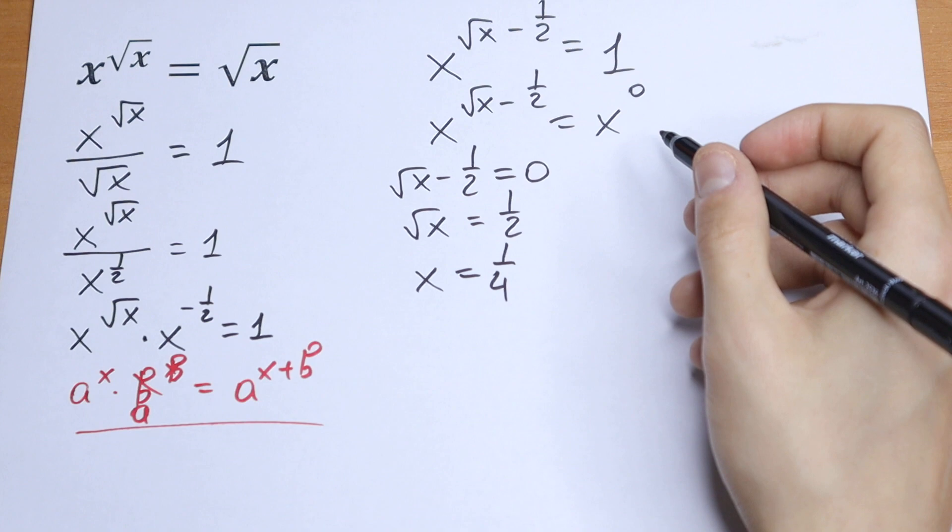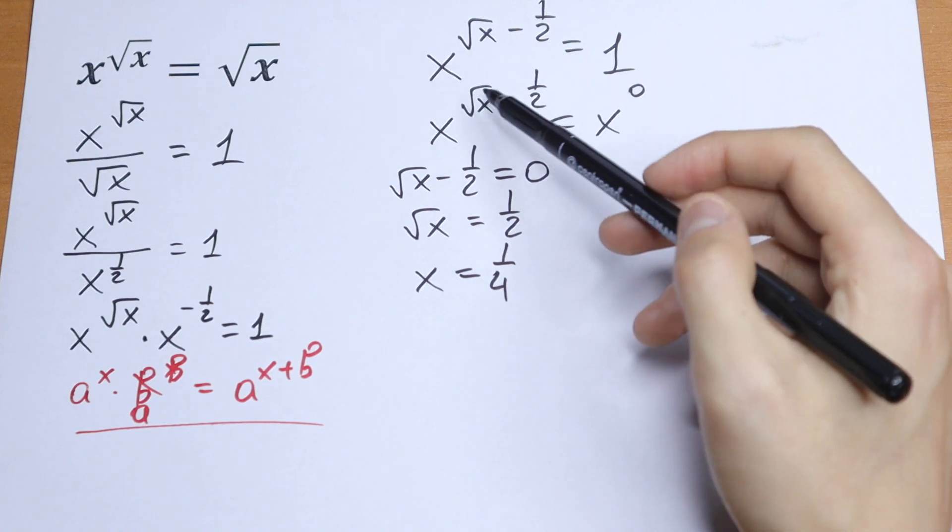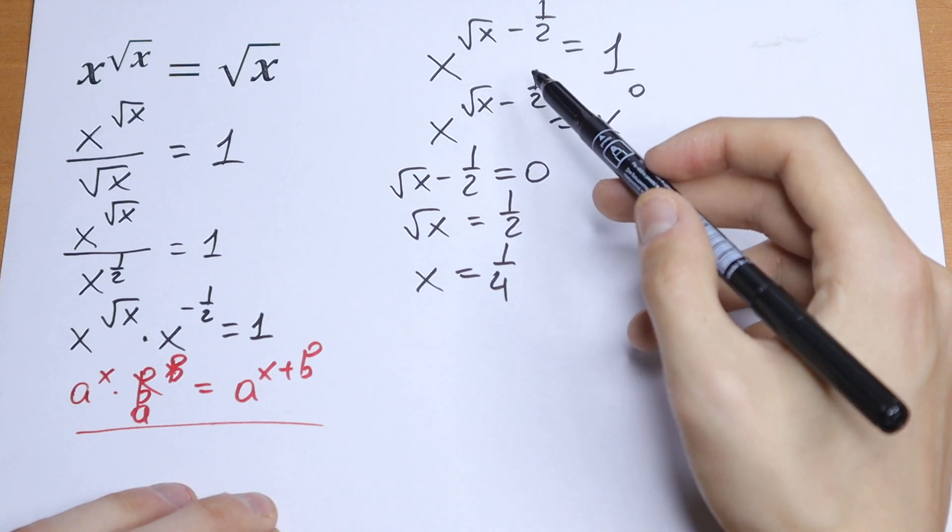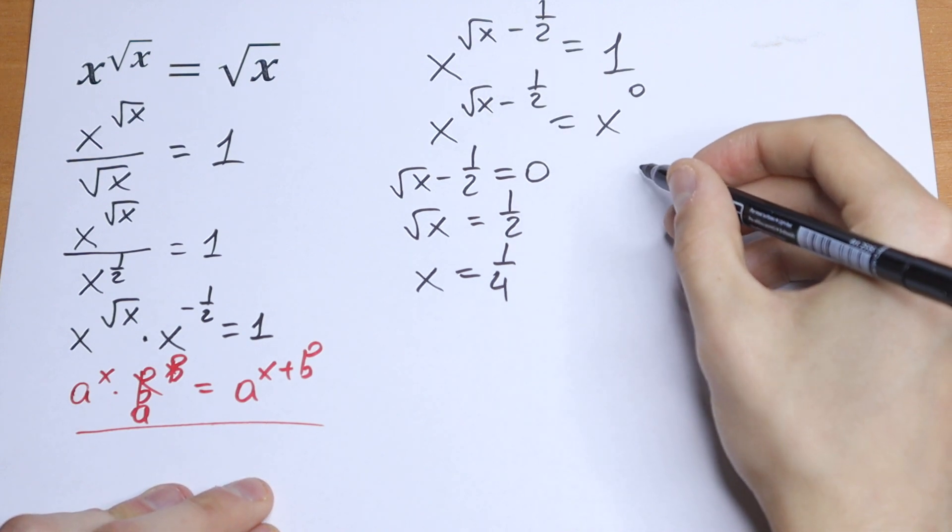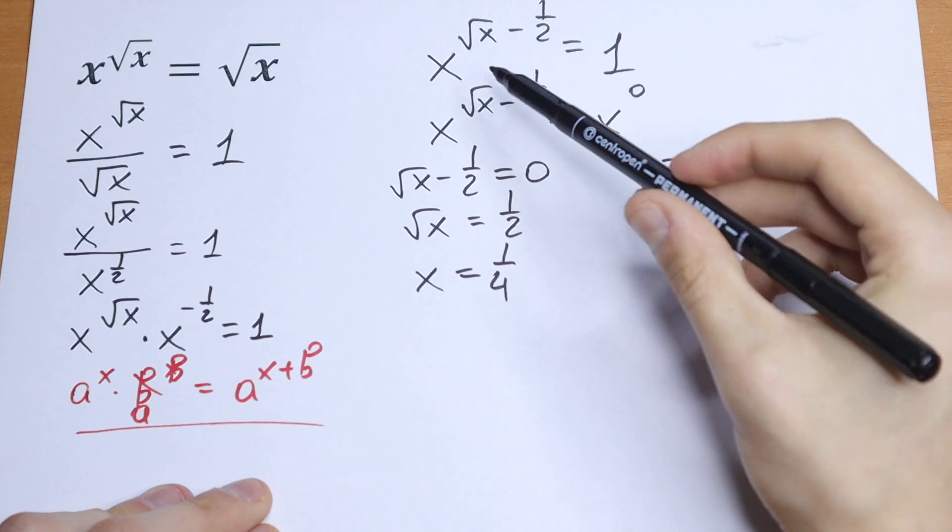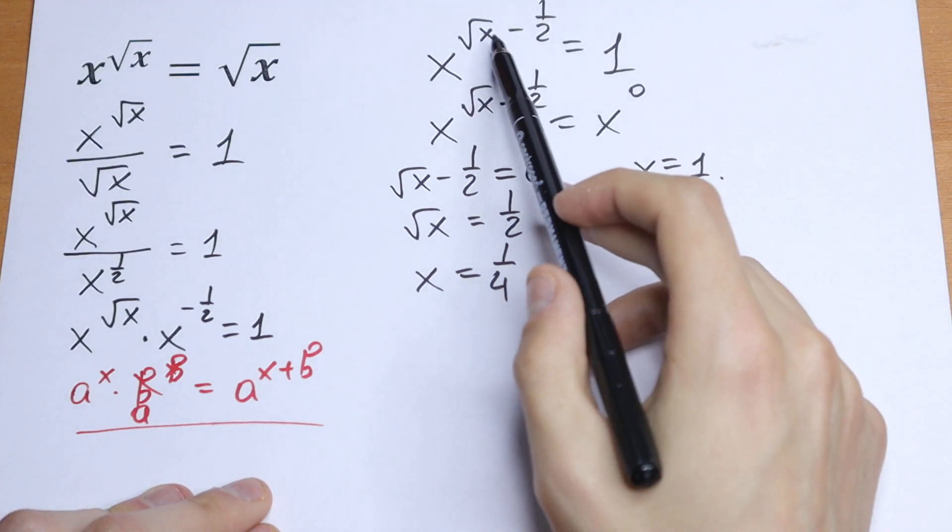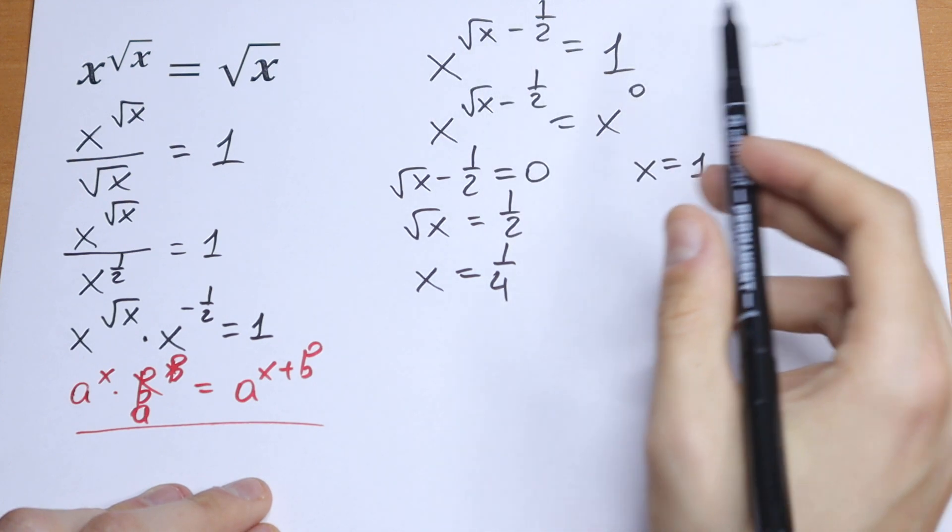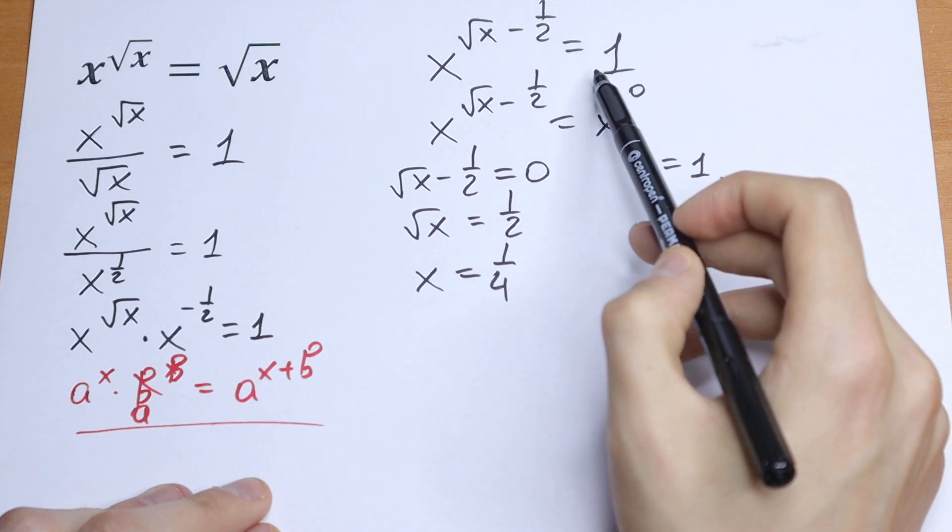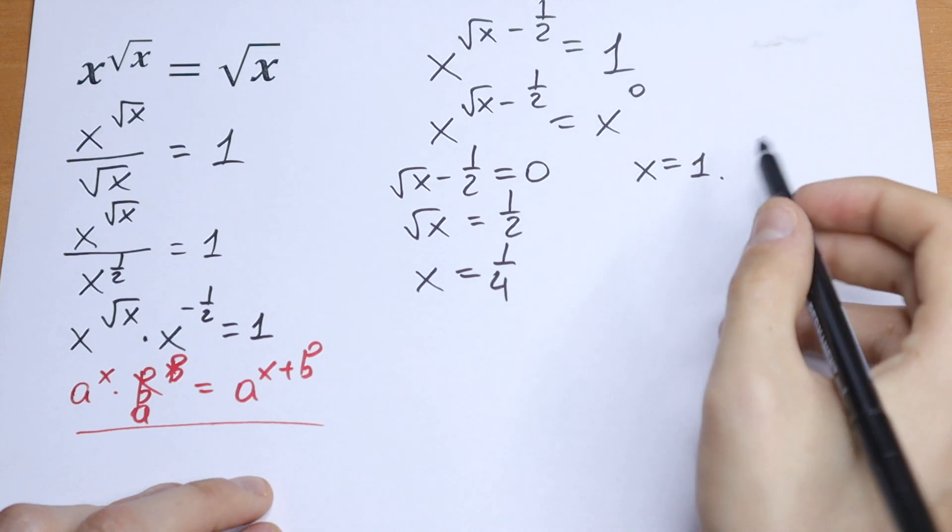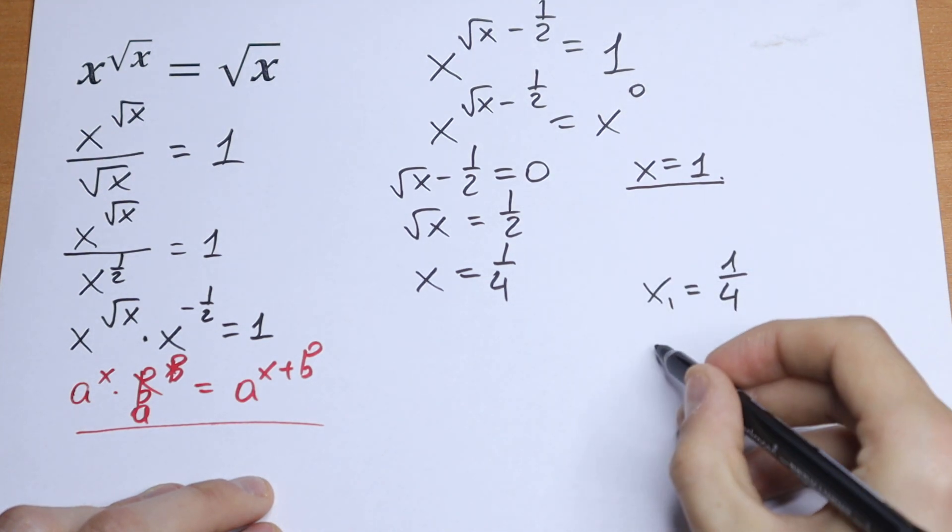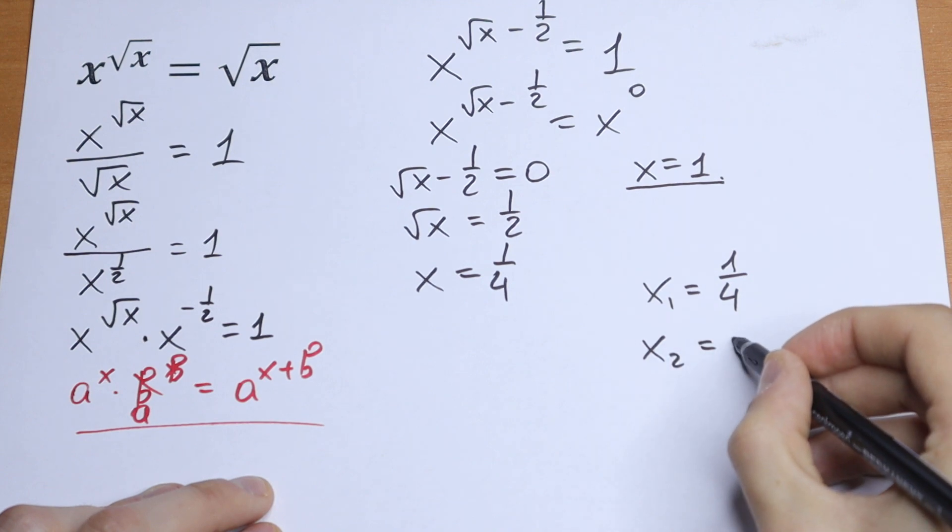But will this be the only root? Maybe we'll have more roots. So let's take a look at this equation. I think that you can see there will be one more obvious root. If x equals one as well, we will have our equation work because it doesn't matter what the power is - if the base is one, the equation will equal one. So we will have two roots: the first one x equals one over four, and the second one x equals one.